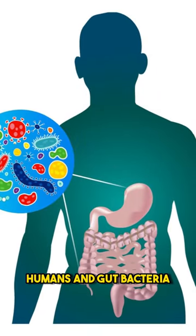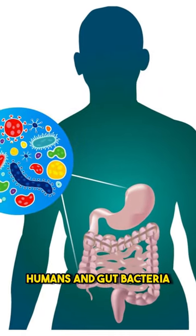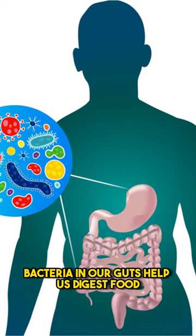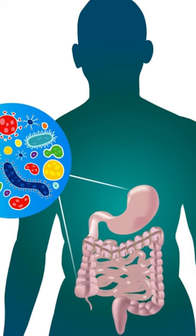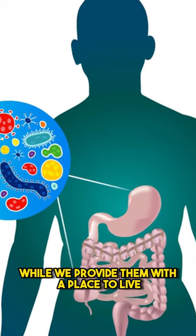Number 5. Humans and Gut Bacteria. Bacteria in our guts help us digest food and produce vitamins, while we provide them with a place to live.